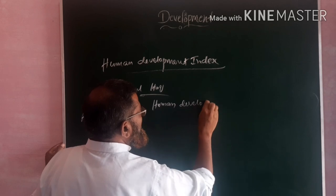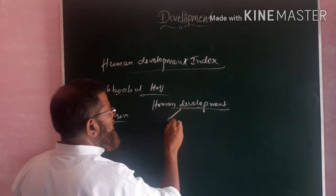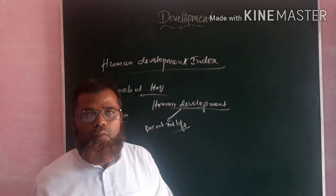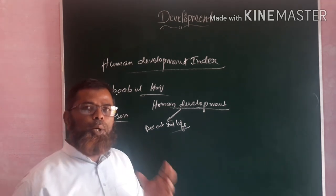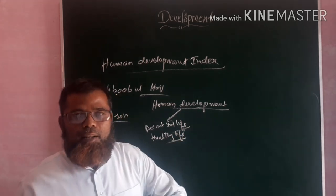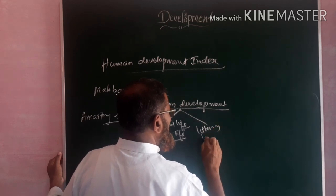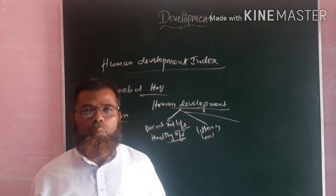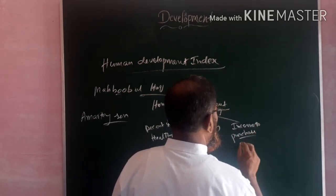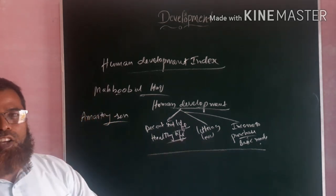In the human development approach, a person in the country should have a decent standard of life, good health conditions, and the ability to have a healthy life — meaning life expectancy will be more. The second factor is the literacy level of the people in that country. The third concept is the income to purchase basic needs of life. If these criteria are met, we can measure the development of a country.